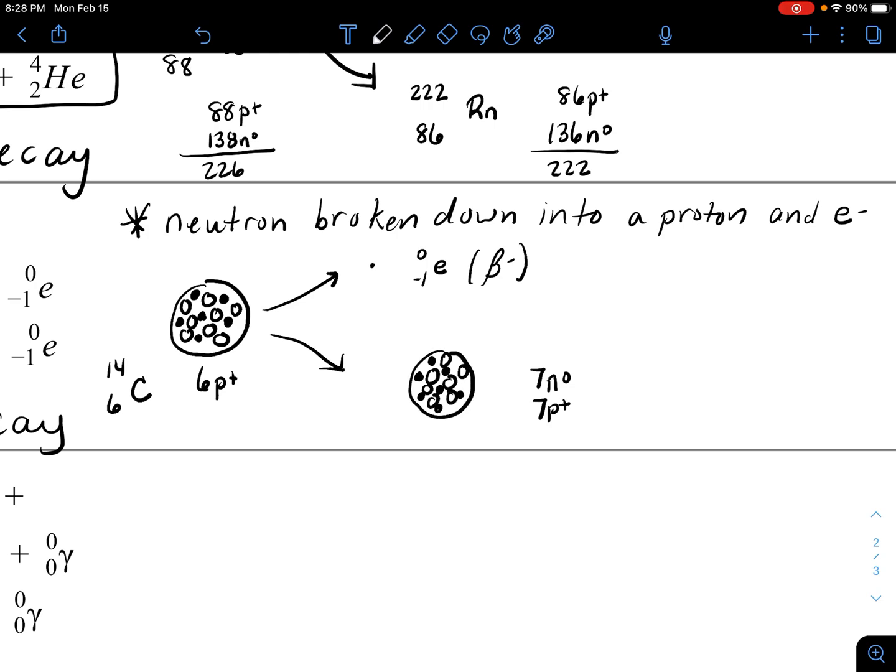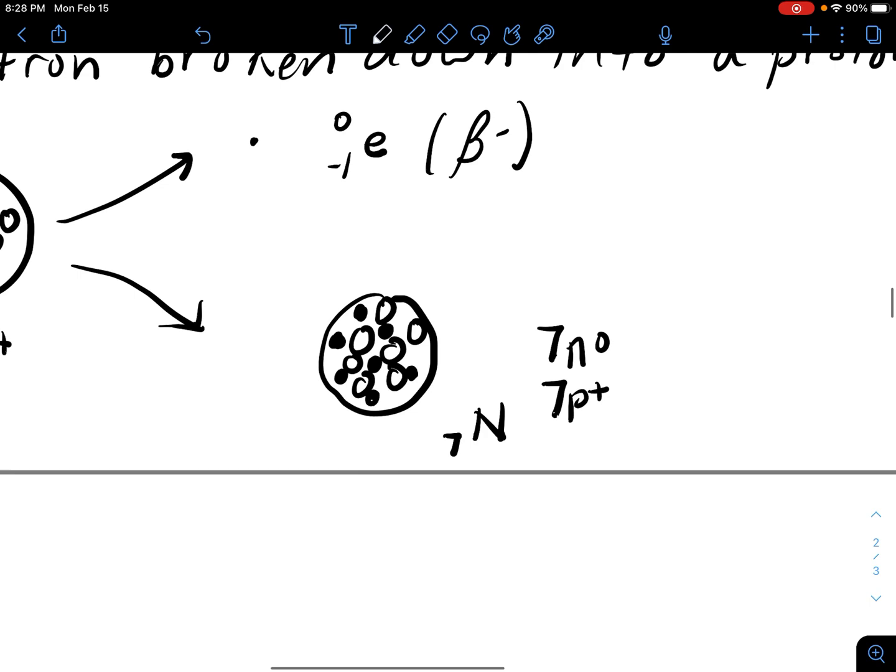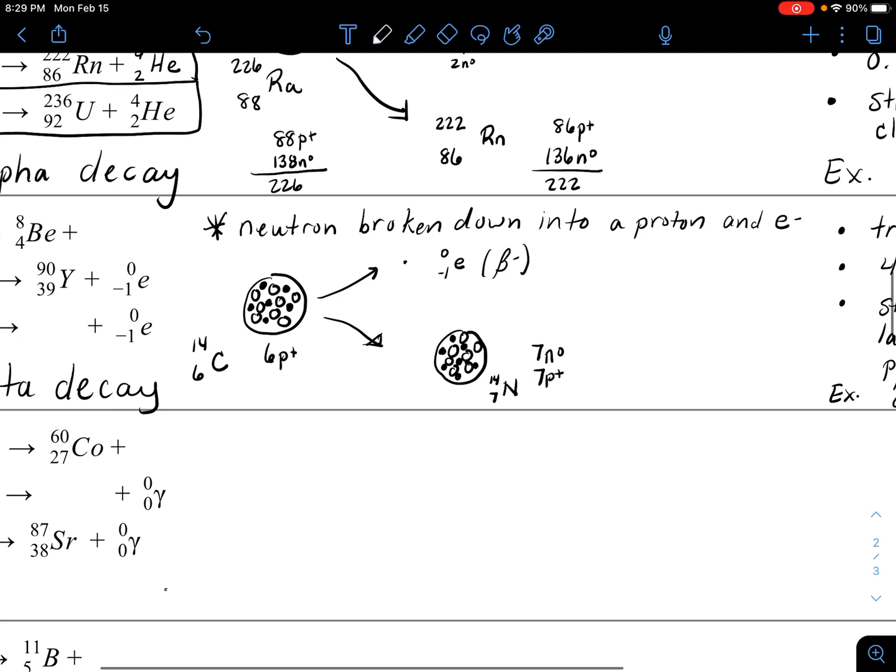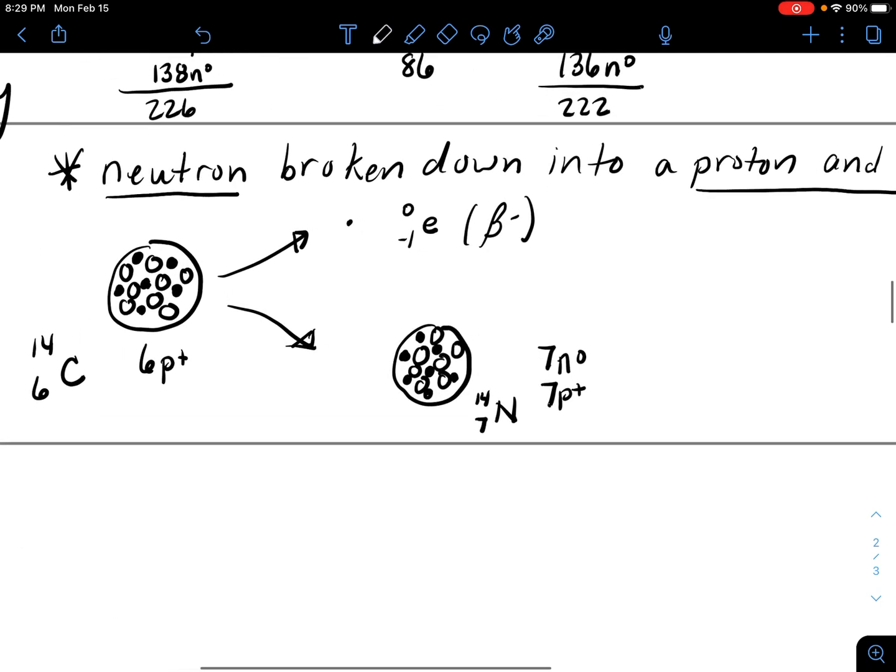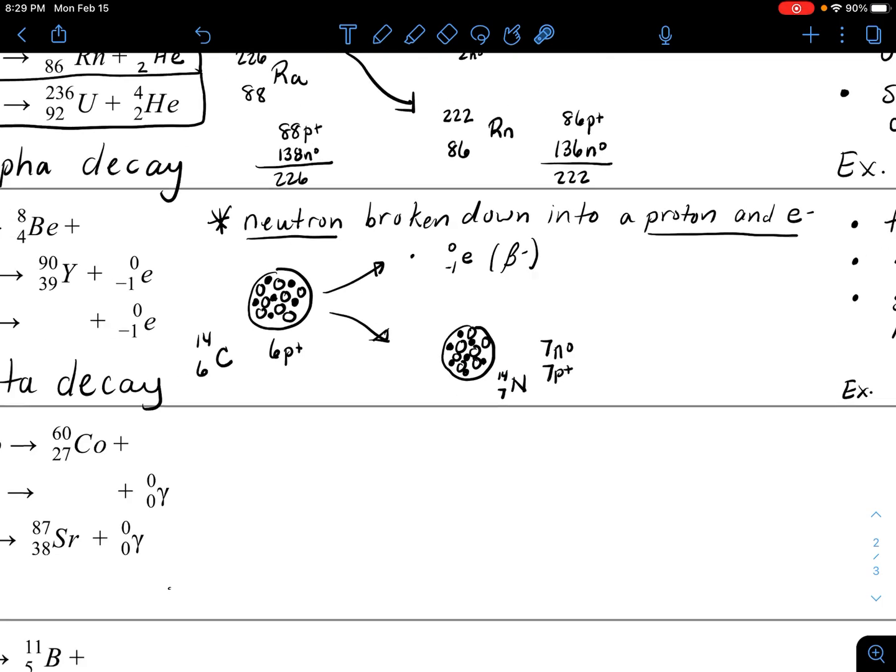What's left over is the proton count goes up, so I have one, two, three, four, five, six, seven protons, and the neutrons go down to seven. This new isotope is nitrogen-14. That's your more stable nuclei that may or may not decay. In this case, it shouldn't decay any farther.